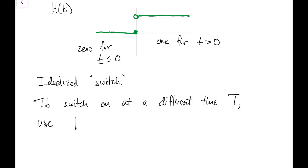In other words, we can use H of t minus capital T, and then that's a function which is 0 for t less than capital T and 1 for t greater than capital T.